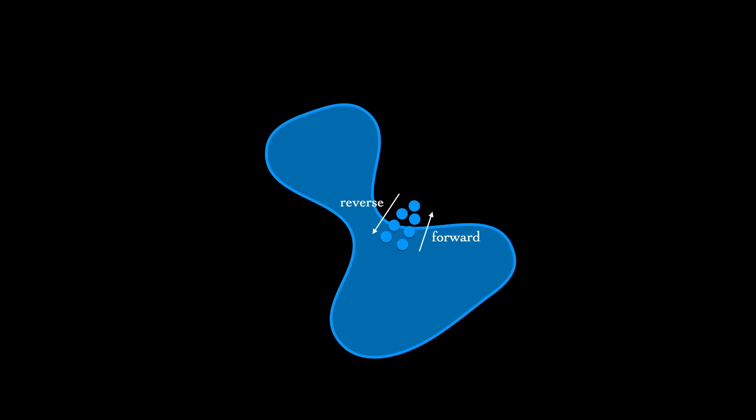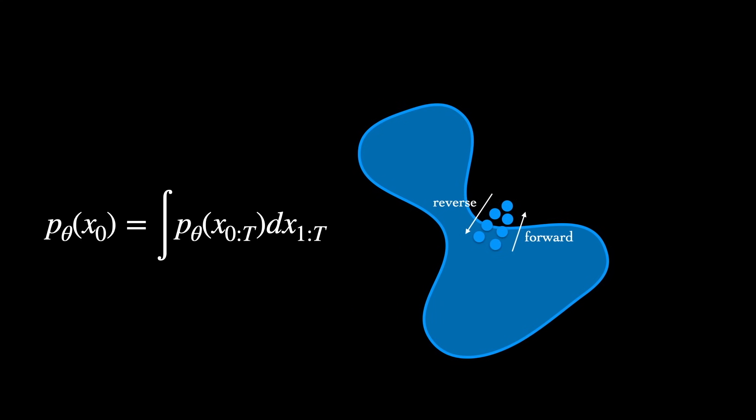But what objective will we actually be optimizing? Is it some maximum likelihood objective where we'd directly maximize the density assigned to x0 by the model? Well, not exactly. If we try to calculate p of x0, we see that we have to marginalize over all the possible trajectories, all the ways we could have arrived at x0 when starting from a noise sample. This unfortunately is intractable.